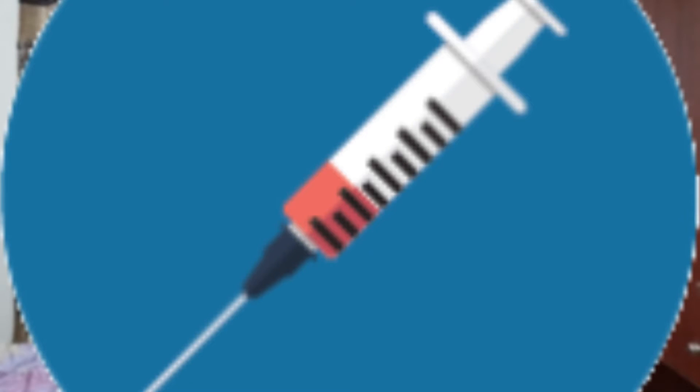The third route of transmission is sharing of syringes and needles, which commonly happens among injectable drug users. A subclass of this includes tattoo parlors where needles are not sterilized properly, which can potentially be a site for HIV transmission. The next route is blood transfusion — even though we screen for HIV among voluntary blood donors, there is still a very small possibility due to the window period, when HIV testing may not be apparent.